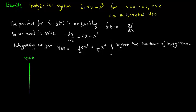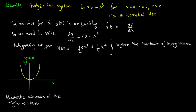First consider r less than zero. We plot v versus x. You get a quadratic and you see that the quadratic has a minimum at the origin, and so the origin is stable.